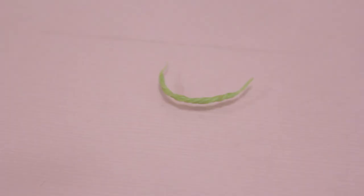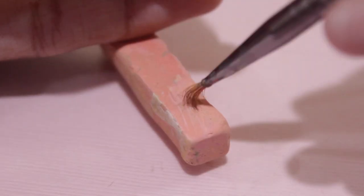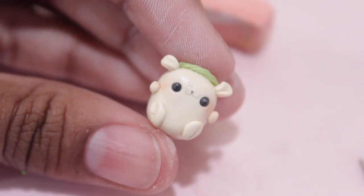For the seaweed headband, I took some pieces of green translucent clay and put that on the head. I also applied some blush with some pink chalk pastel.